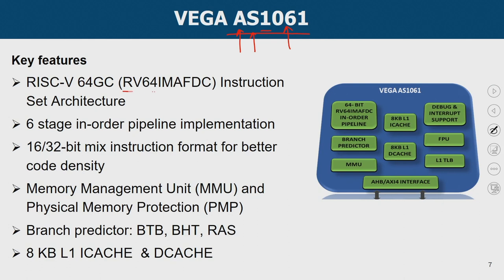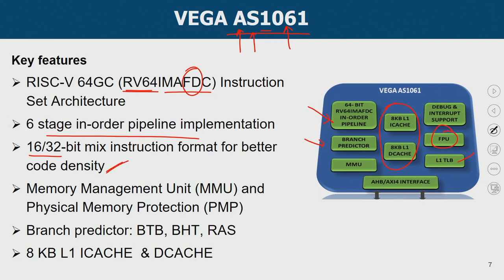It supports the RISC-V 64-bit architecture with all standard classes of instructions. It has an in-order pipeline, a branch predictor, and a translation lookaside buffer. Since it supports floating-point operations (FD), it has a floating-point unit. It also has caches — an 8 KB icache and dcache — and a memory management unit. It offers a 6-stage in-order pipeline implementation. You can use either 32-bit or 16-bit compressed instructions for better code density. It has a memory management unit and physical memory protection features, a branch target buffer, branch history table, and return address stack for highly accurate branch prediction, plus 8 KB L1 icache and dcache.